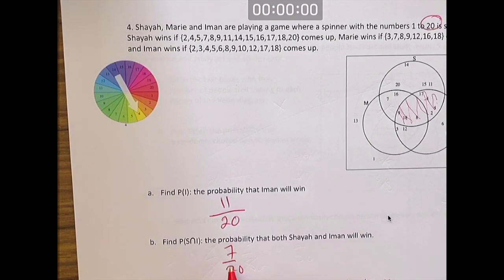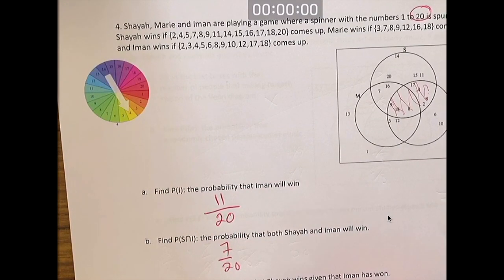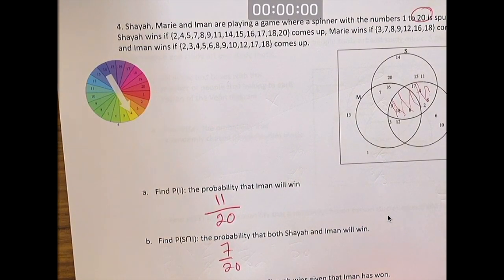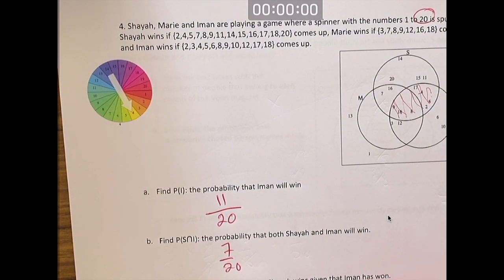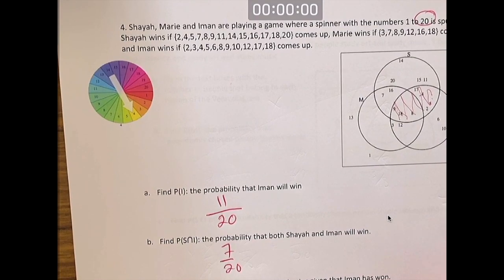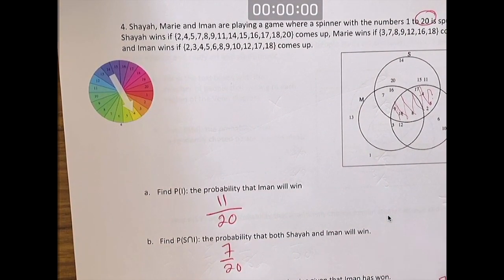The probability of S and I, we already figured it out. It's 7 over 20. The probability of I, we've already figured it out. It's 11 over 20. We're dividing these two fractions. When you divide fractions, you multiply by the reciprocal of the dividing fraction. 7 over 20 times 20 over 11. The 20s cancel. You get 7 out of 11.